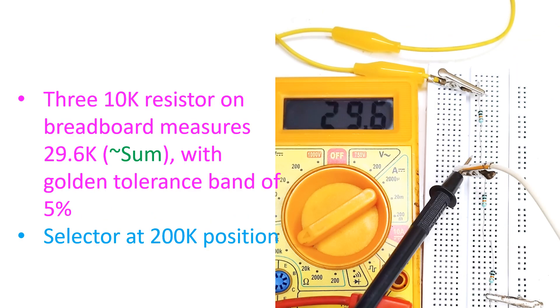Three 10k resistors in series on breadboard measures 29.6k with golden tolerance band of 5 percent. Selector at 20k position.